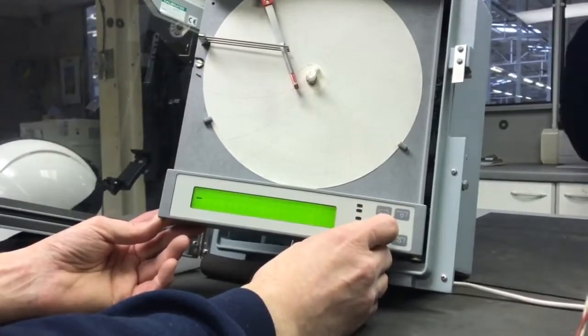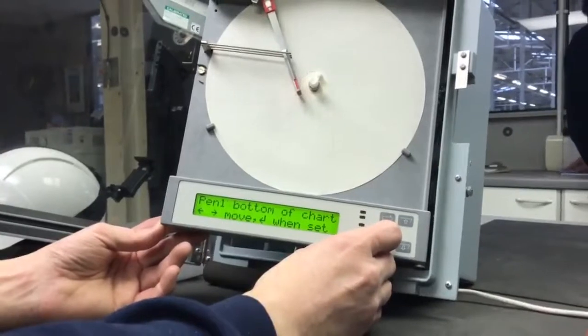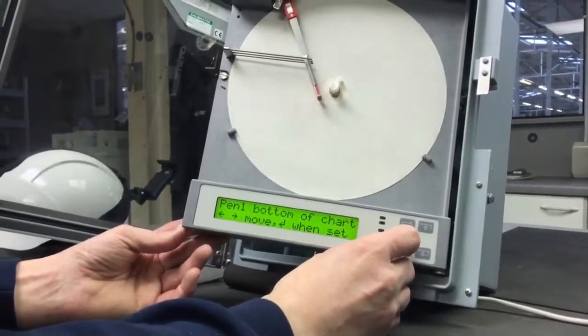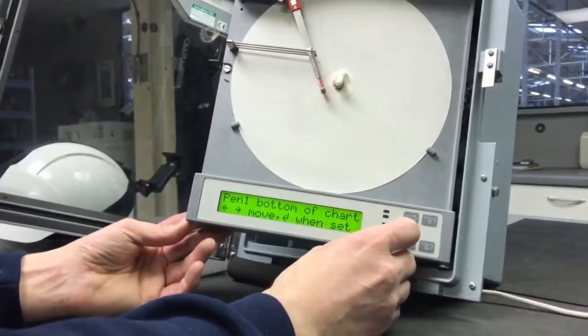Press the enter button and the pen drives to the first line on the chart. If it's slightly out, use the arrow buttons to drive the pen to that position.